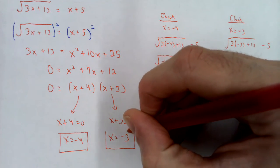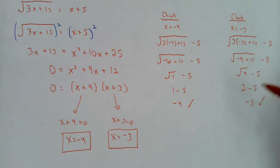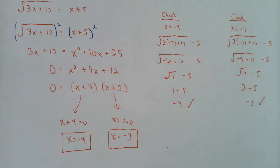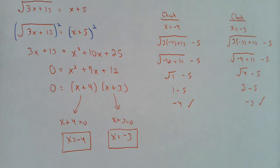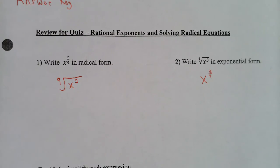If one of those answers does not work — suppose you get 8 down there — that would be called an extraneous solution, which means you don't circle it because it doesn't work. That is the end of the quiz review on rational exponents and solving radical equations.